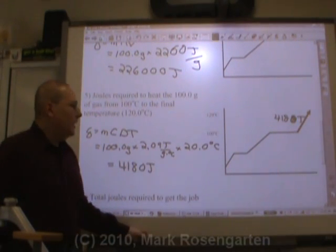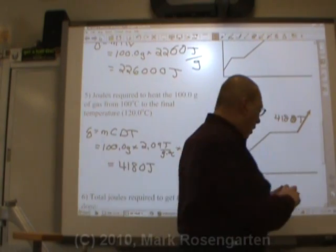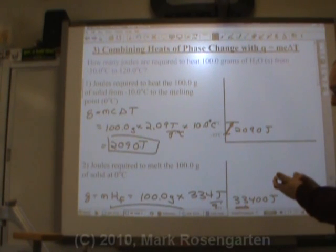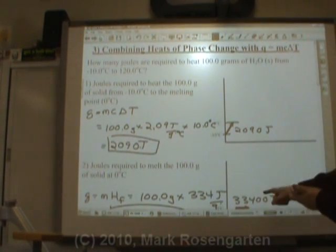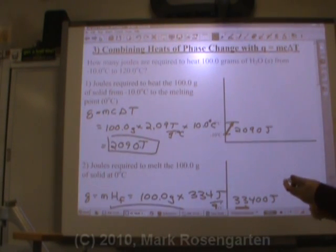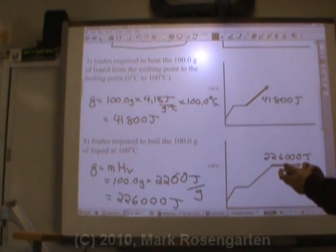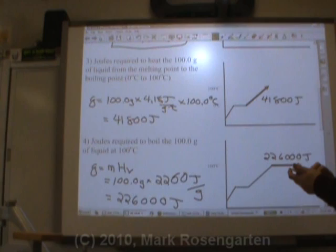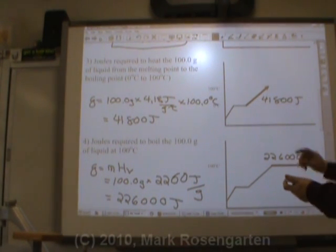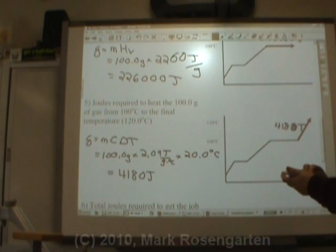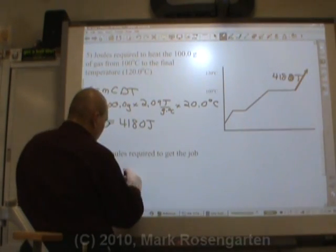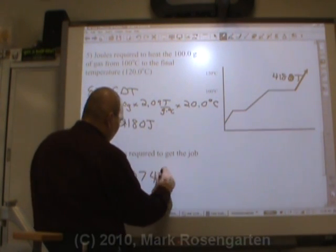Now what? Well, if you want to get the total joules, what we have to do is add them all together. So let's do that. It took 2,090 to get it to the melting point, plus another 33,400 joules to melt it, plus 41,800 joules to get it to the boiling point, plus 226,000 joules to boil it, plus 4,180 joules to bring it up to its final temperature. And that gives us a total number of joules, 307,470.